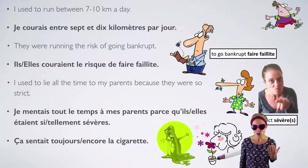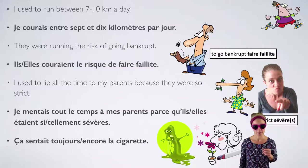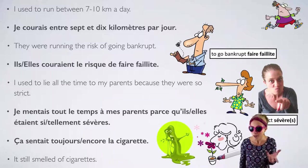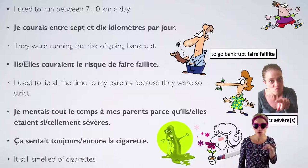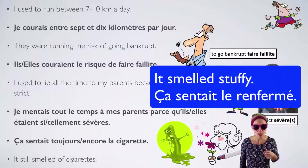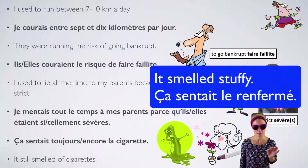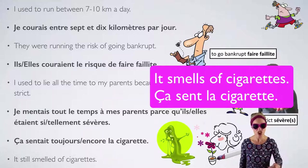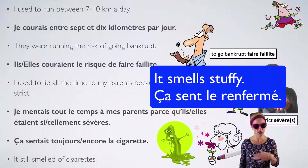Ça sentait toujours la cigarette? Ça sentait encore la cigarette? — 'It still smelled of cigarettes.' So 'toujours' means always but also 'still,' and so can 'encore.' In French, if you want to say 'it smelled of something,' you have to say 'it was smelling the something': Ça sentait la cigarette. When something is stuffy, when the windows haven't been opened, the French call it 'le renfermé' — the closed-in. So Ça sentait le renfermé — it smelled stuffy. In the present tense: Ça sent la cigarette — it smells of cigarettes. Ça sent le renfermé — it smells stuffy.